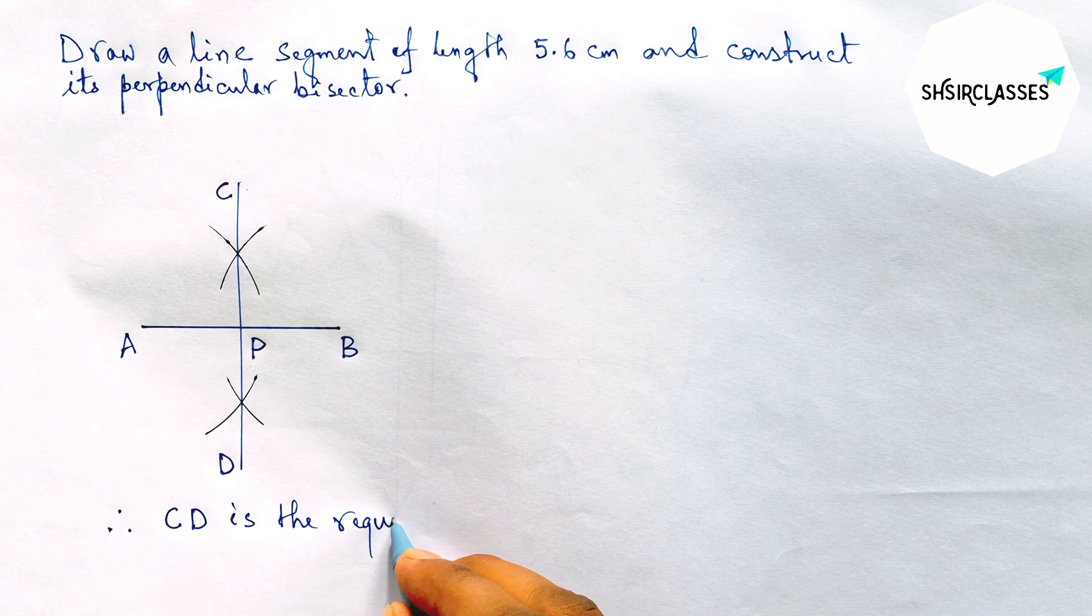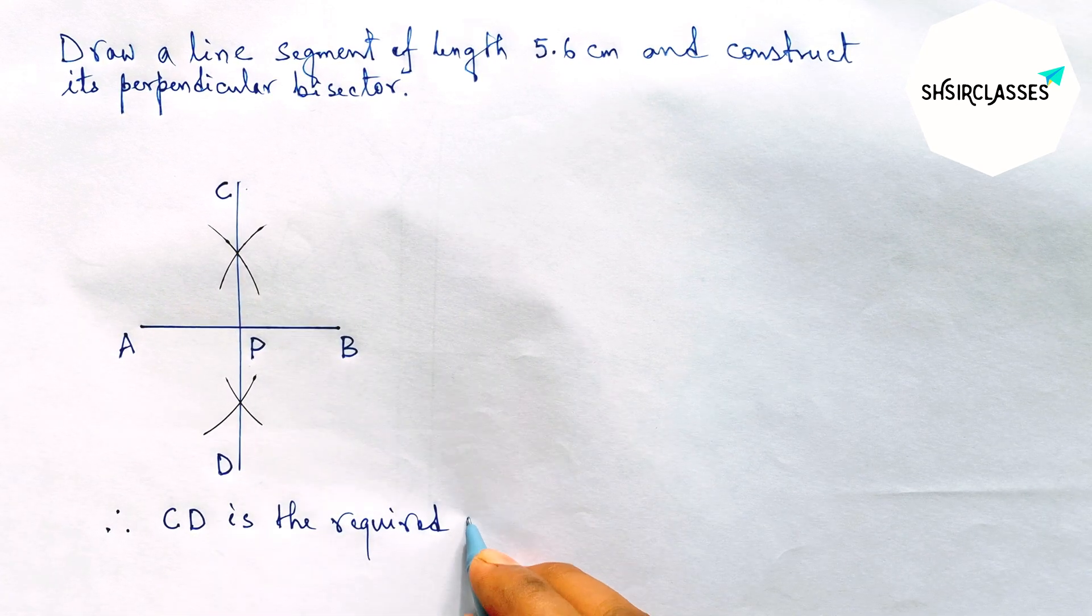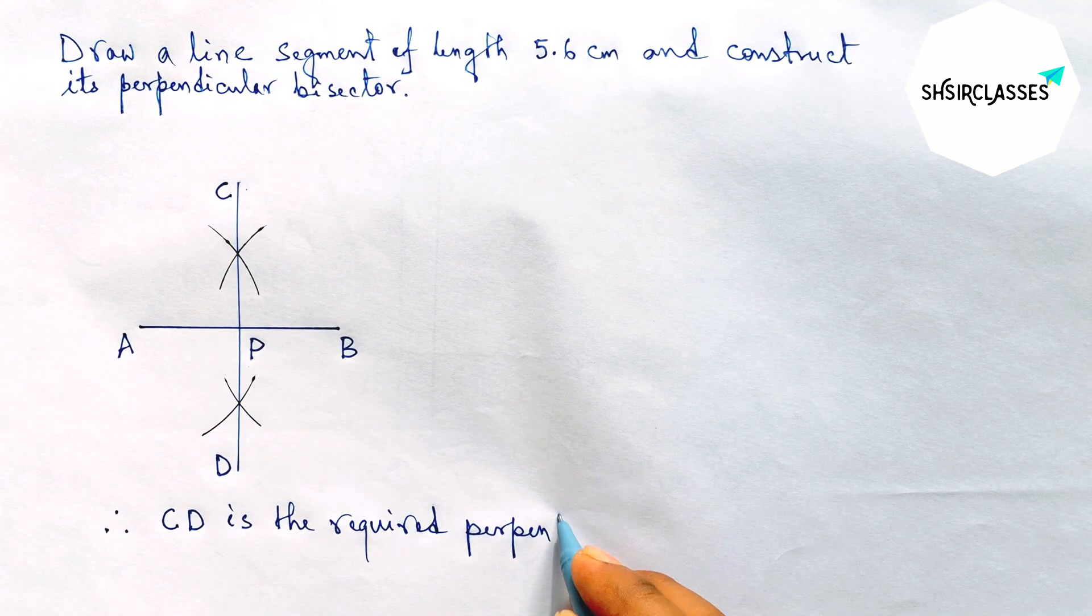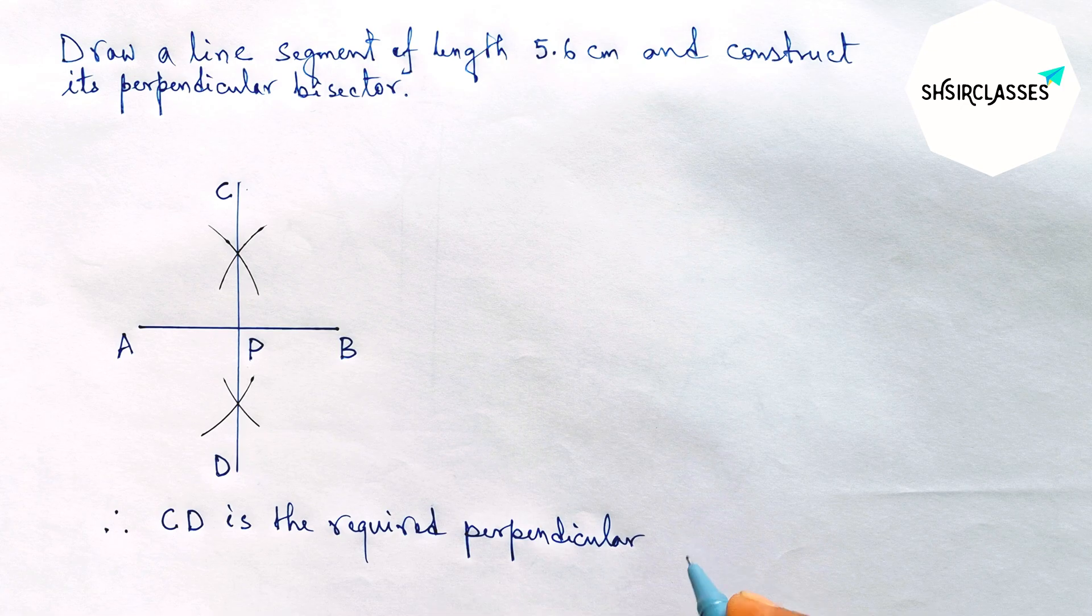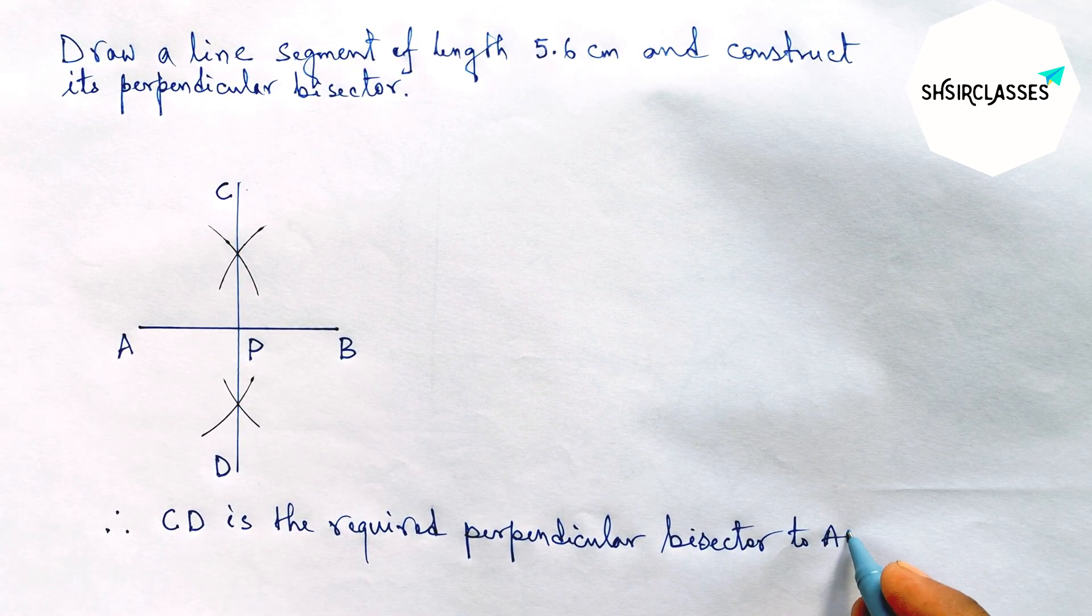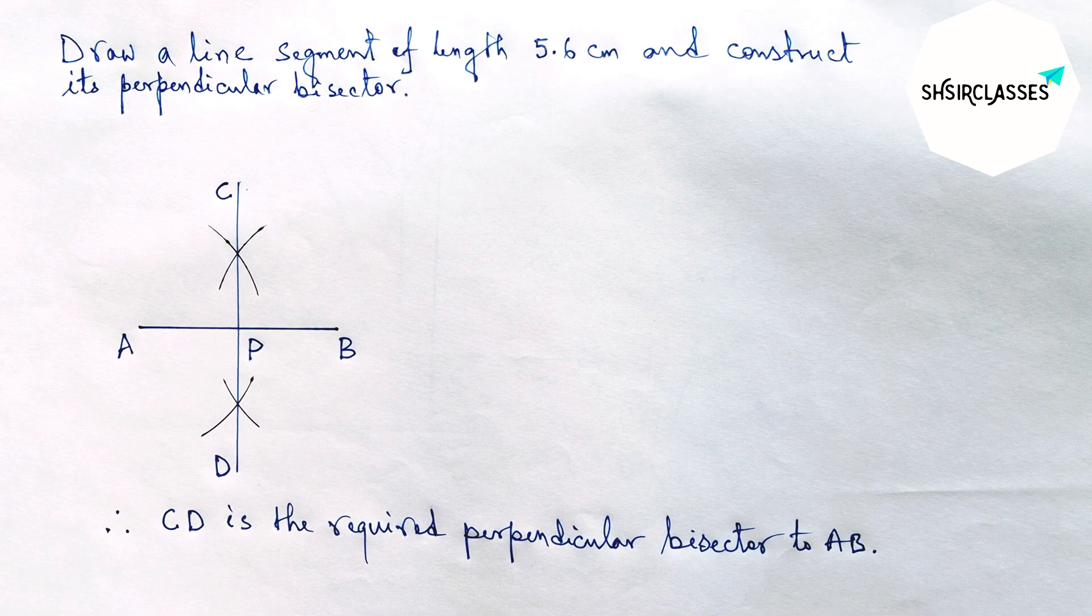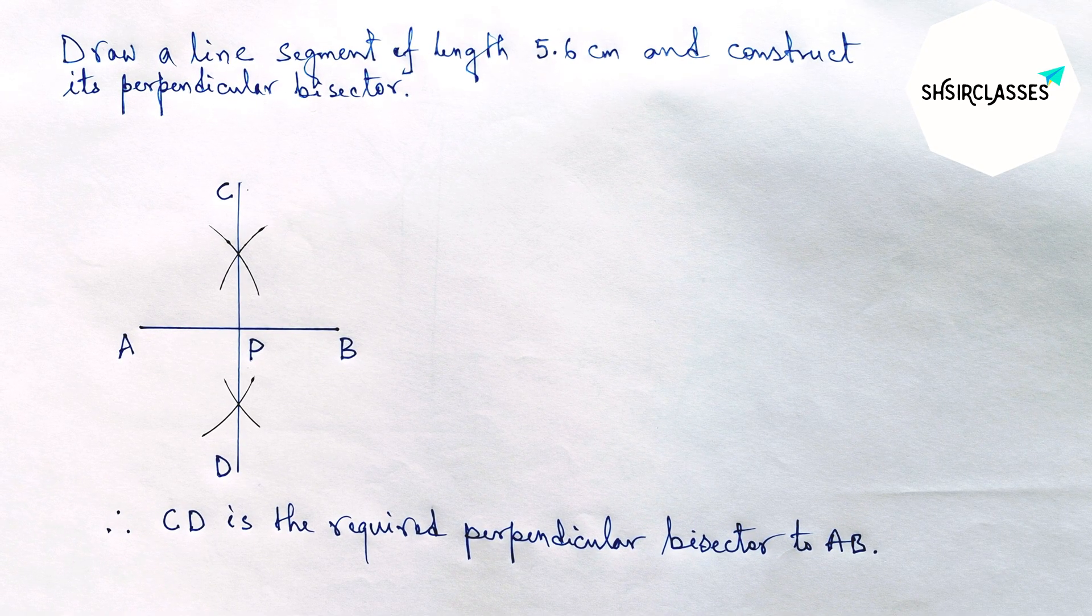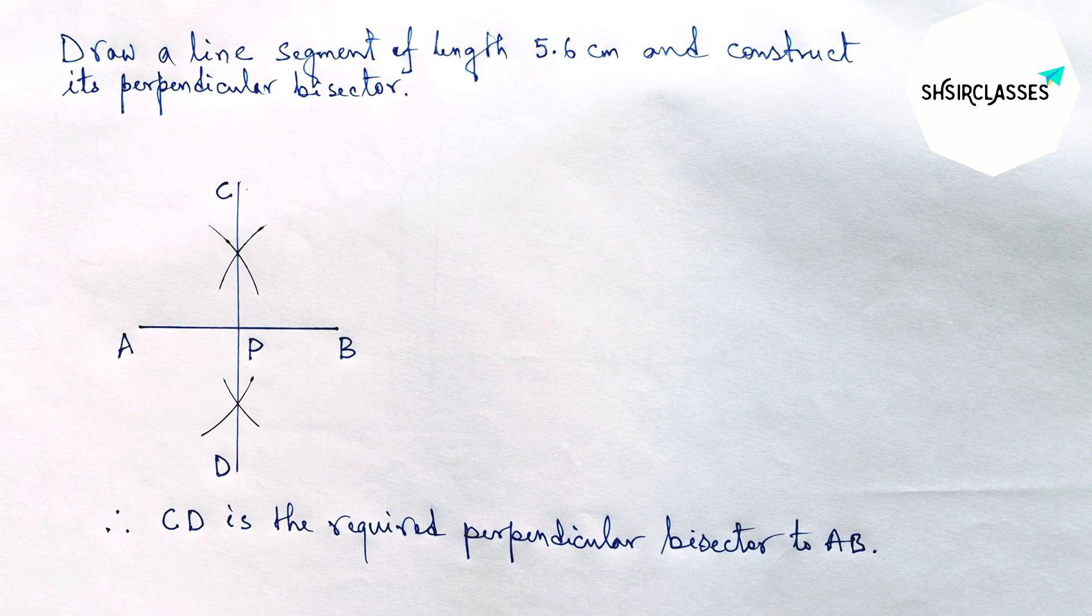CD is the required perpendicular bisector to the given line AB equal 5.6 centimeters. And by this way you can construct perpendicular bisector to a given line. So that's all, thanks for watching. If this video is helpful to you, then please share it with your friends.